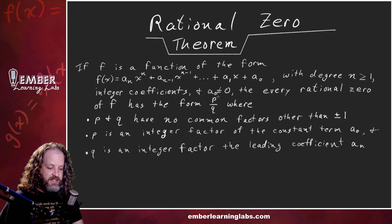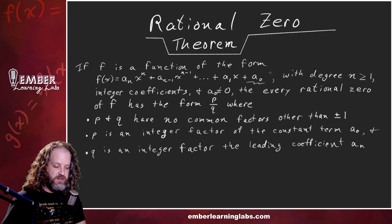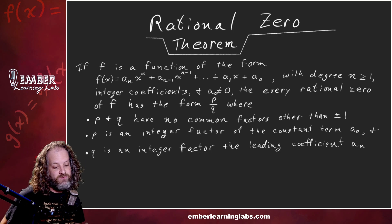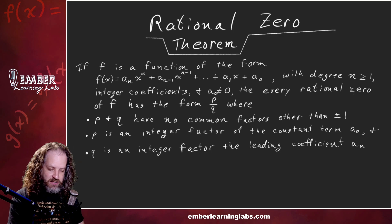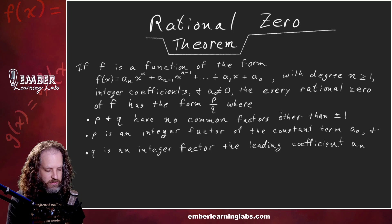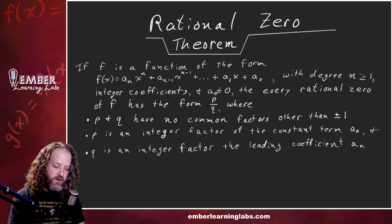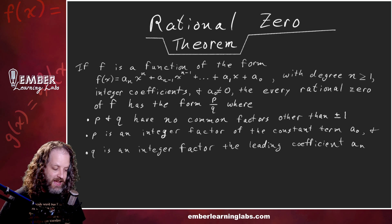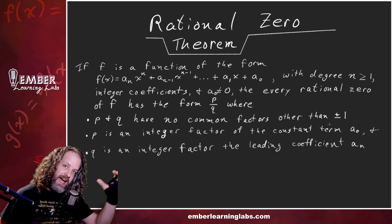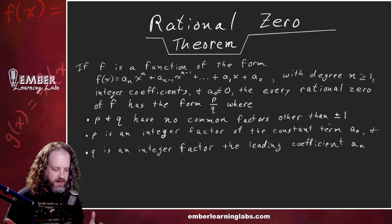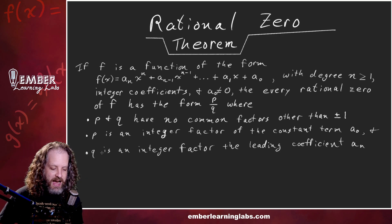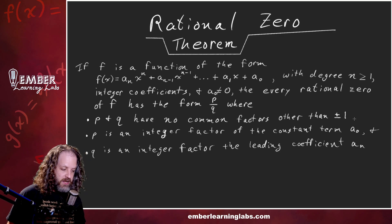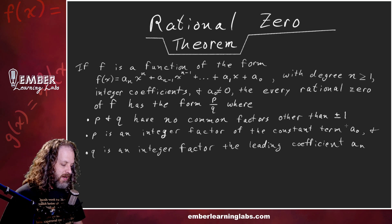And the constant term a-sub-zero is not zero — if it doesn't have a constant term, you can probably factor out one or more x's. The rational zeros of f have the form p over q, where p is an integer factor of the constant term and q is an integer factor of the leading coefficient, and p and q have no common factors other than plus or minus one.